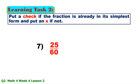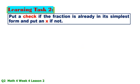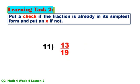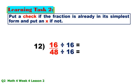Number 7: 25/60 — GCF is 5; 25 ÷ 5 = 5, 60 ÷ 5 = 12, so not in simplest form. Number 8: 35/43 — in simplest form. Number 9: 35/78 — in simplest form. Number 10: 14/15 — in simplest form. Number 11: 13/19 — in simplest form. Number 12: 16/48 — GCF is 16; 16 ÷ 16 = 1, 48 ÷ 16 = 3, so one-third — not in simplest form.